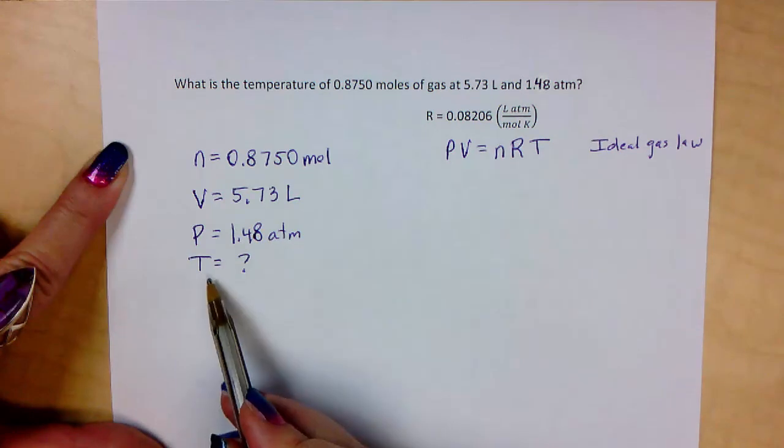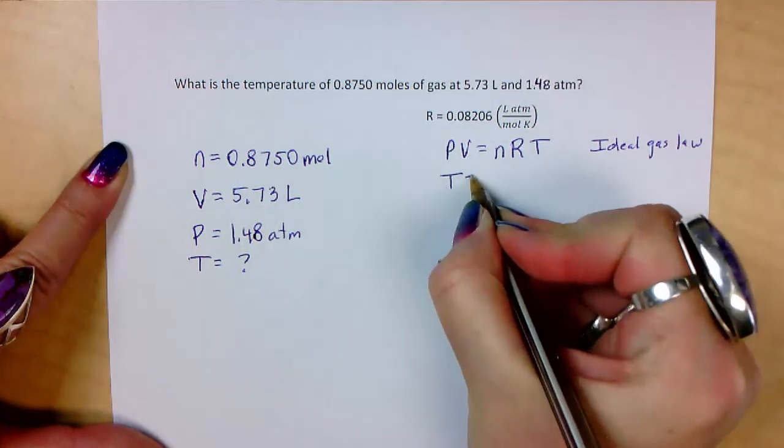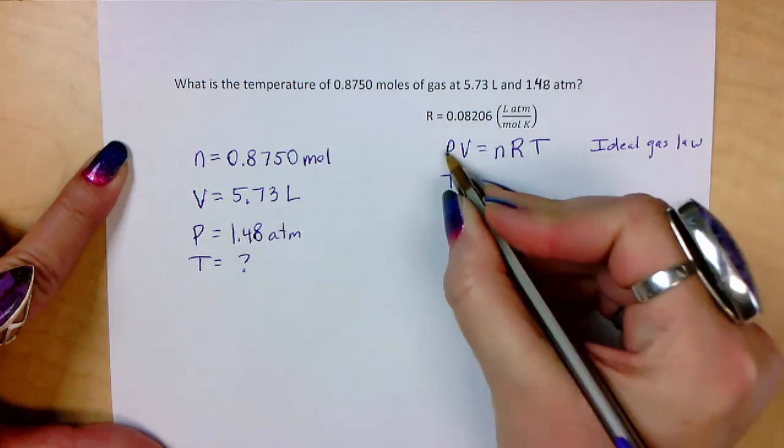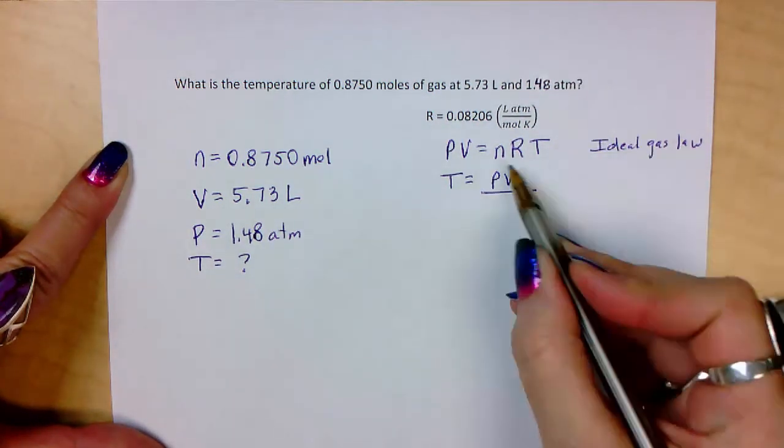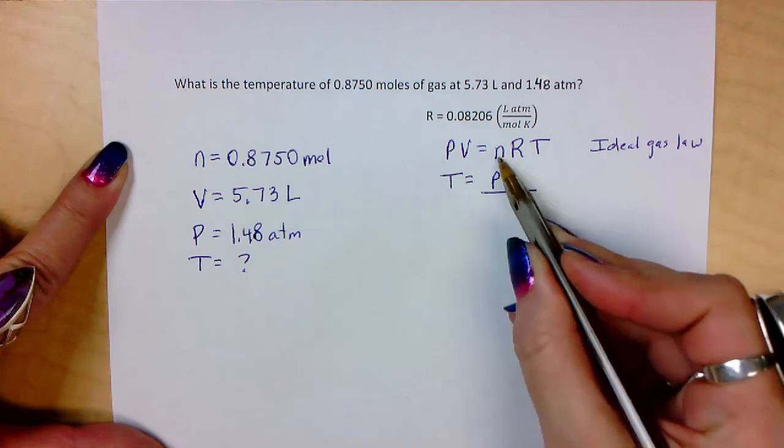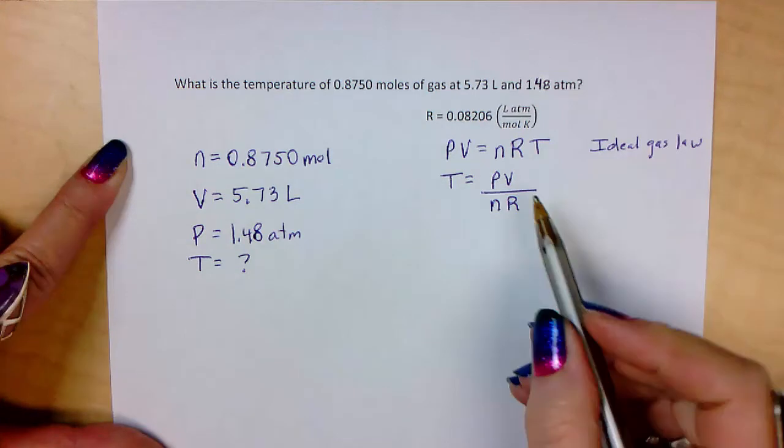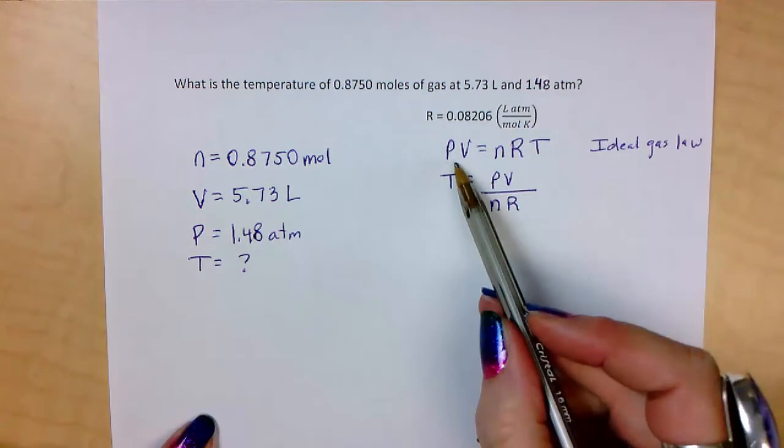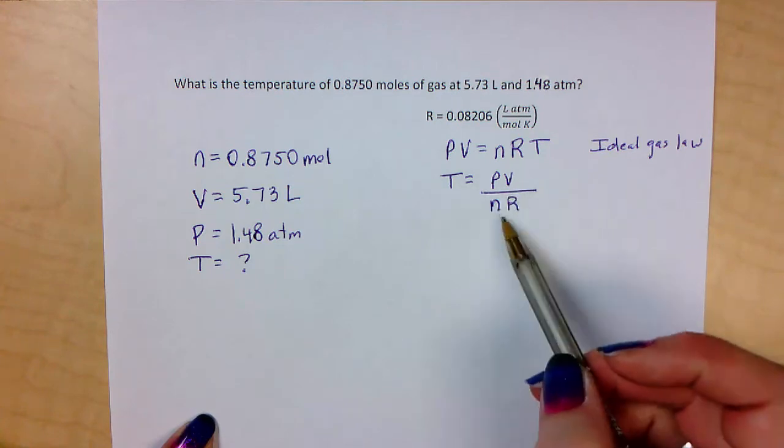So what are we solving for? Again, temperature. So let's solve for temperature. Temperature will equal PV over—we need to divide both sides by n and R. And that will bring the n and R over to this side on the bottom. So temperature is going to equal pressure times volume over nR.